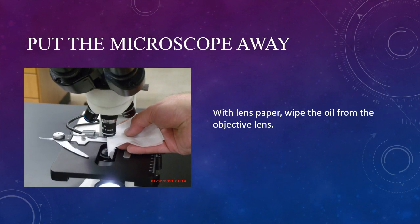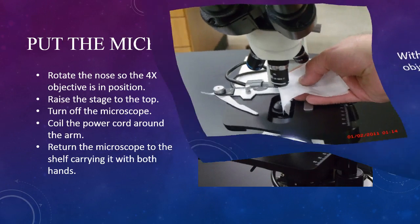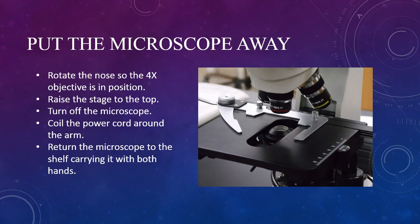Use lens paper to clean the oil from the objective lens. It is important that you use only lens paper to do this — paper towels and even kim wipes are too abrasive and could scratch the lens. Once the 100x objective is clean, rotate the 4x objective into the viewing position.